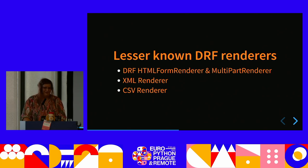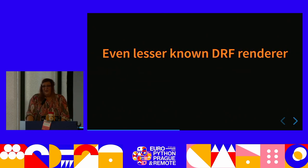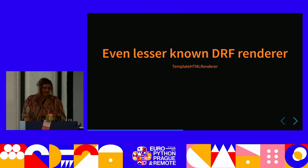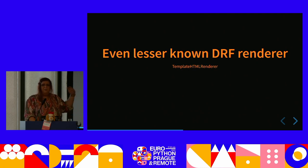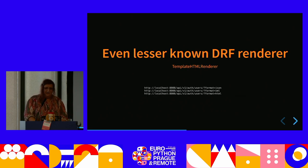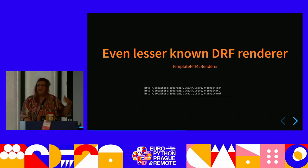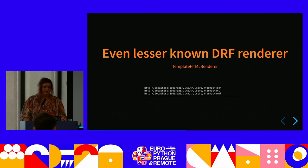But there's an even lesser known DRF renderer: the template HTML renderer. This one just uses a template like regular Django class-based views. You can use this to take a template and render whatever is outputted from your view. And you can use it alongside other renderers like the JSON renderer and the XML renderer, having your HTML renderer live alongside them.